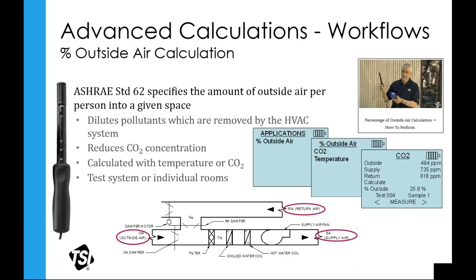To measure the amount of outdoor air coming into a space, you can use either carbon dioxide or temperature. Temperature works if there's a significant difference between inside and outside — if the difference is only five or six degrees, it's not the best approach. Using carbon dioxide has been shown to be a very good indicator of the amount of fresh air in the space. The process is: go outside and take a CO2 measurement, then measure the supply duct, then the return duct, and calculate the percentage of outside air coming into the building.